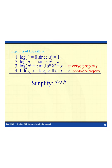Here we see the other side of the inverse property. I have an exponential equation with a log in the exponent. My base for the exponential equation is 7, and the base of the log is also 7. Since these match — the second half of property 3 — the value of my log is what the answer simplifies to. The 7 and log base 7 cancel out, and the final answer is 9.